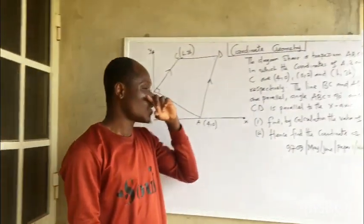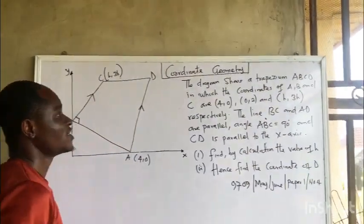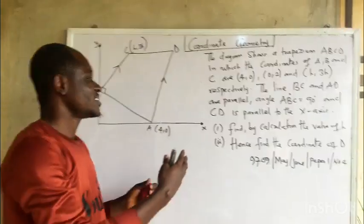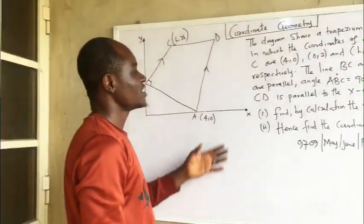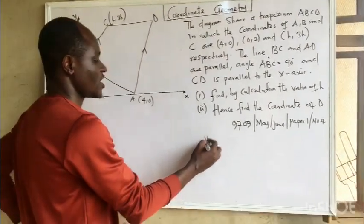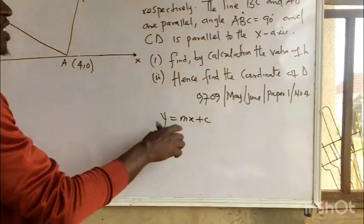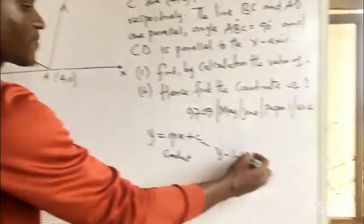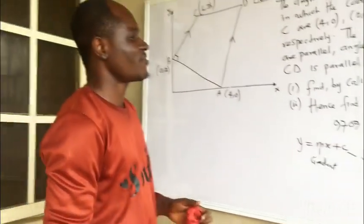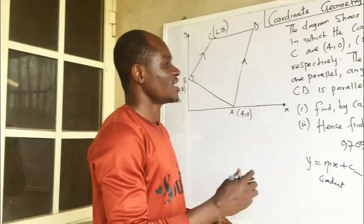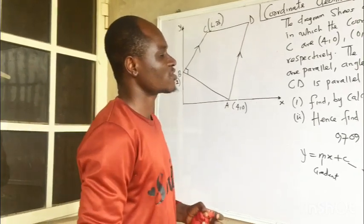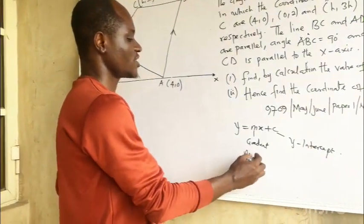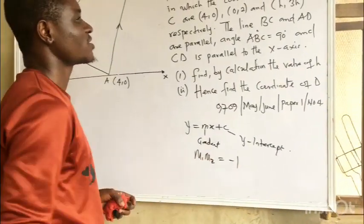In today's lesson, we want to look at a question under coordinate geometry. Under coordinate geometry, we have been taught the equation of a straight line and lines that are parallel or perpendicular. The general equation of a straight line is y = mx + c, where m is the gradient and c is the y-intercept. For parallel lines, they have the same gradient. For perpendicular lines, the product of their gradients equals minus 1.